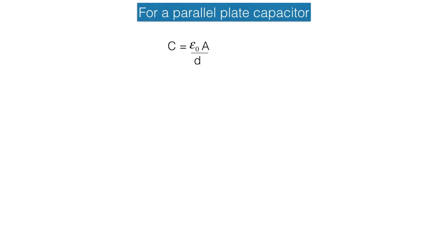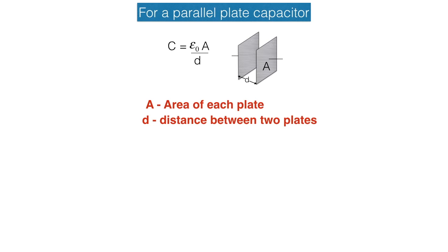But for that you must know the formula. The equation on which we will work is C equals epsilon zero A by d. Obviously A stands for area of each plate and d shows the distance between two plates.